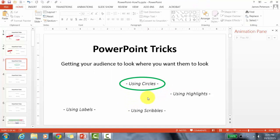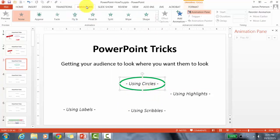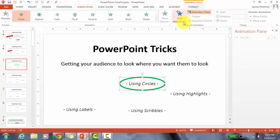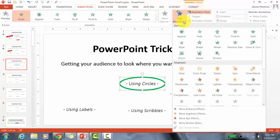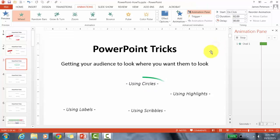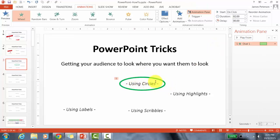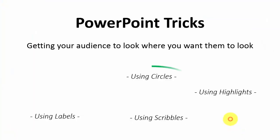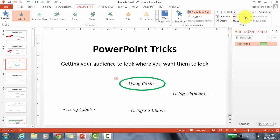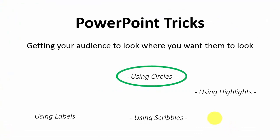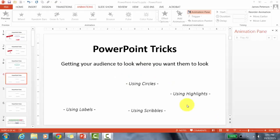Now I want to animate the circle. Click on Animations and make sure your Animation Pane is open. The animation I like to use is Wheel, so go to Add Animation and click Wheel — it draws kind of a circle. By default it takes two seconds, which feels too slow. I'm going to change the duration to 0.5 seconds — half a second is enough. And that's all there is to doing a circle.